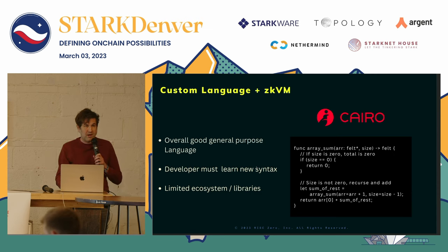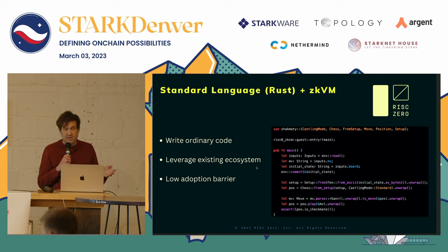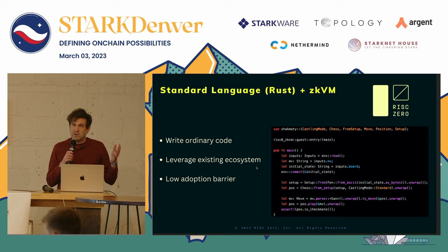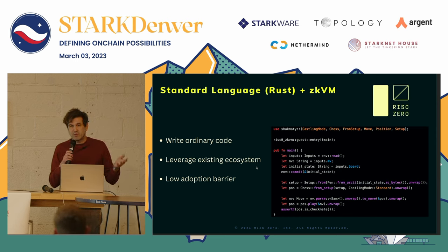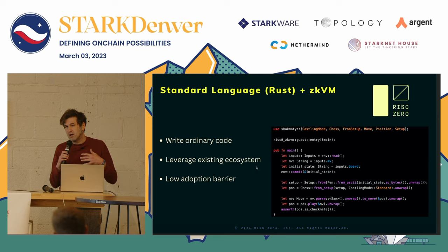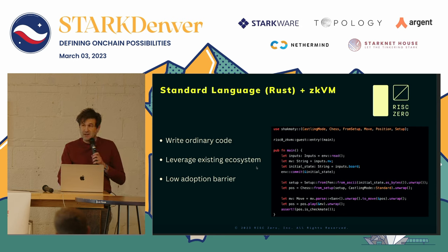What we at RISC-Zero have been working on is building a zero-knowledge virtual machine that can run arbitrary Rust code. You can take a standard language like Rust, write ordinary code, and use the existing Rust ecosystem and all the code already in that ecosystem. For the chess example — if you wanted to determine whether some chess position is one move from checkmate — you'd have to encode all the rules of chess into your zero-knowledge proof. In Rust, there are already existing libraries, so you just import the chess library, make a couple of simple calls, and you can quickly and easily do that. A lot of complicated existing code, like physics engines, is already in Rust, so by making it possible to run Rust code inside a zero-knowledge proof, you can make development much, much easier and get a lot more done much more quickly.